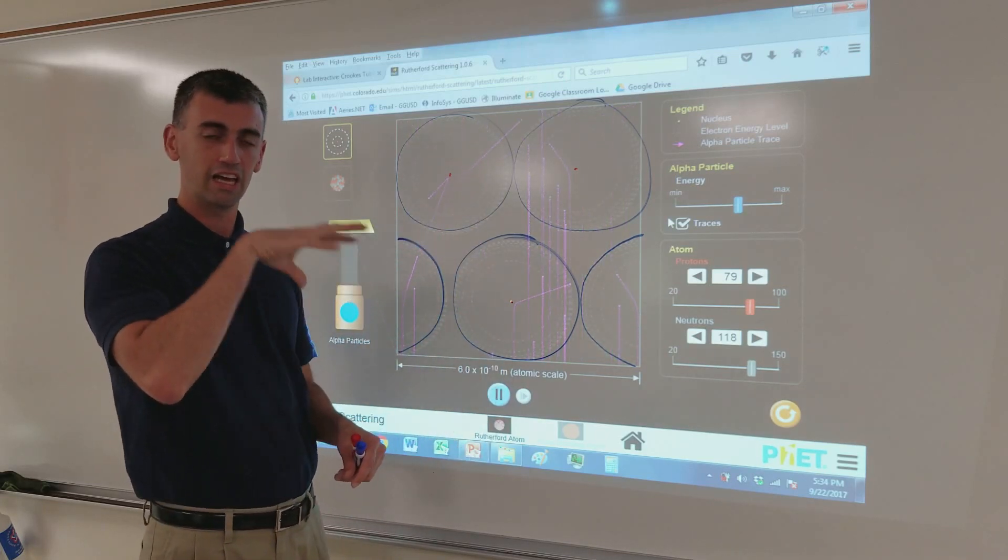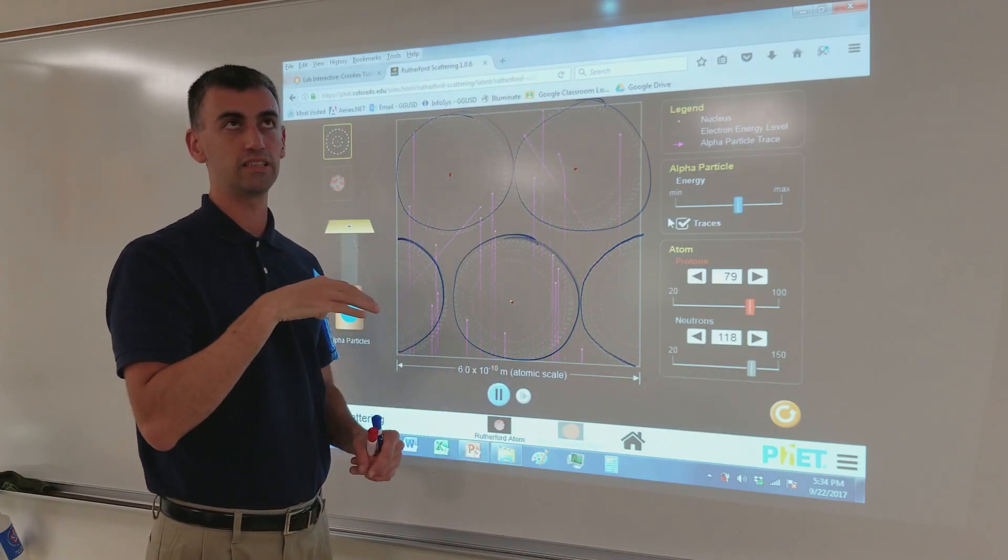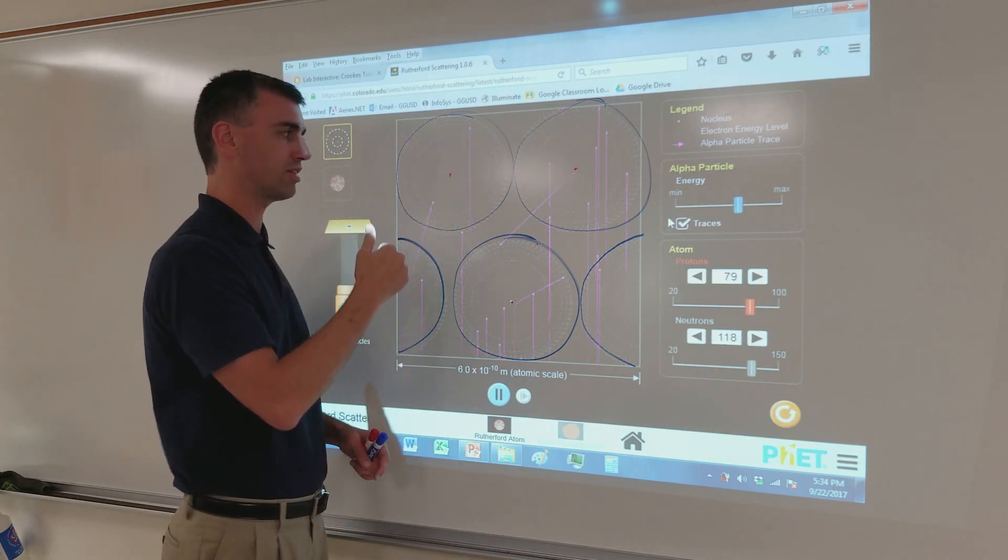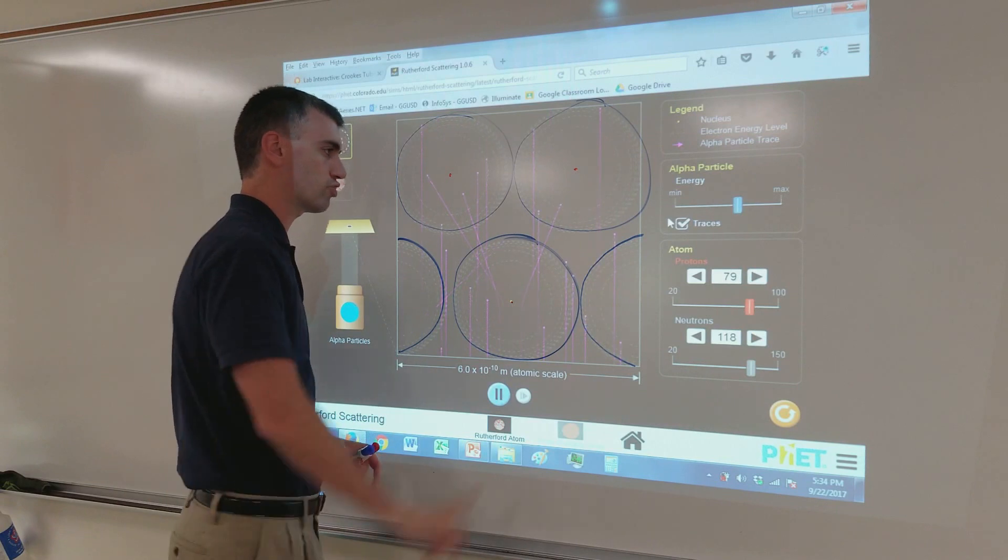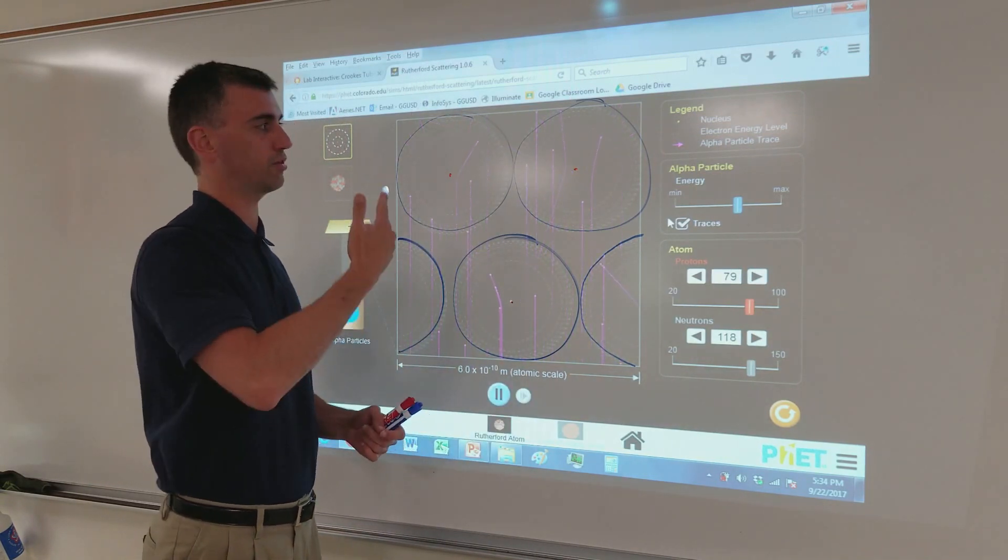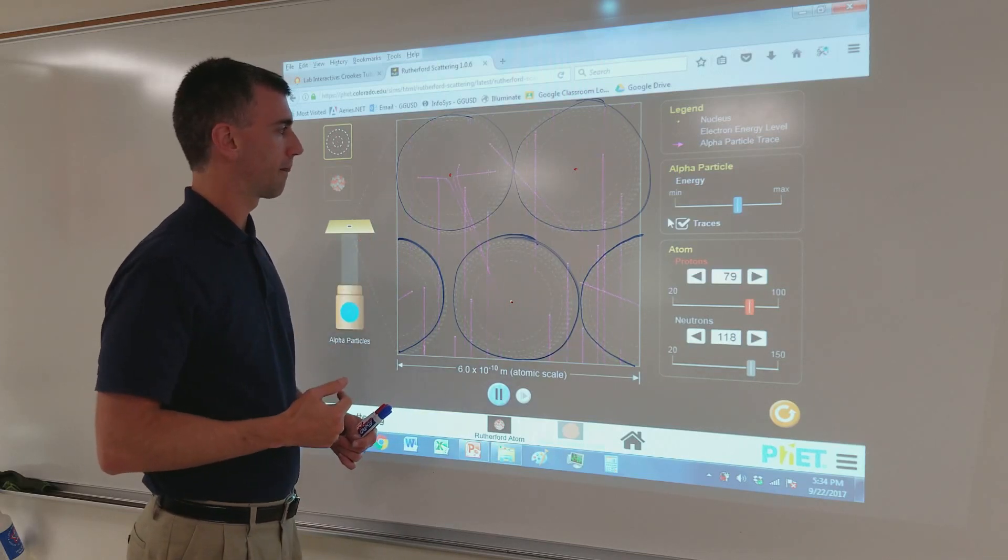This exaggerates it a little bit. In reality, only about one in, I want to say, one in 20,000 other particles actually hit a nucleus and bounced off. The vast majority just went straight through. As a percentage, that's like, what, 99.999%? Just went straight through.